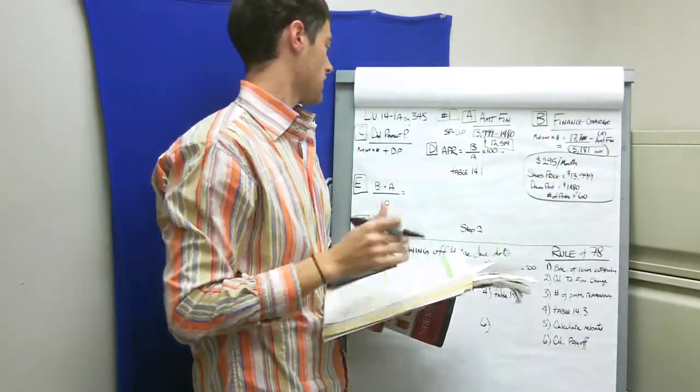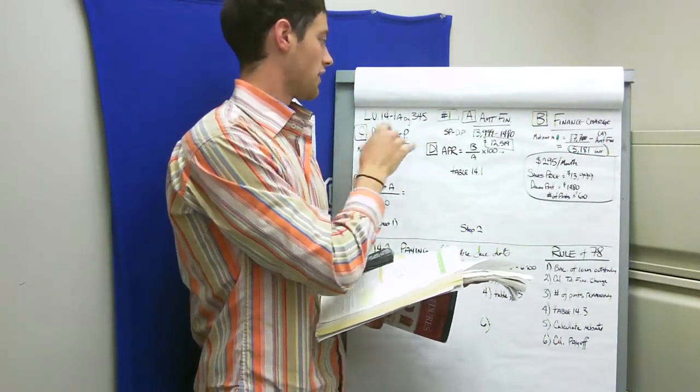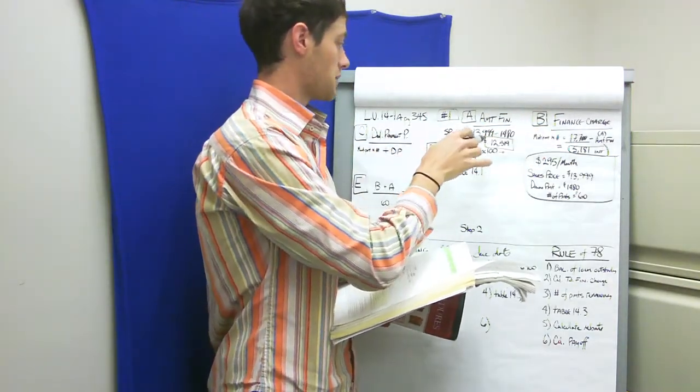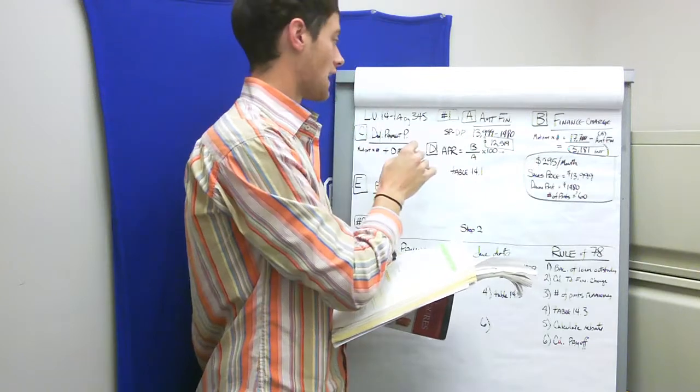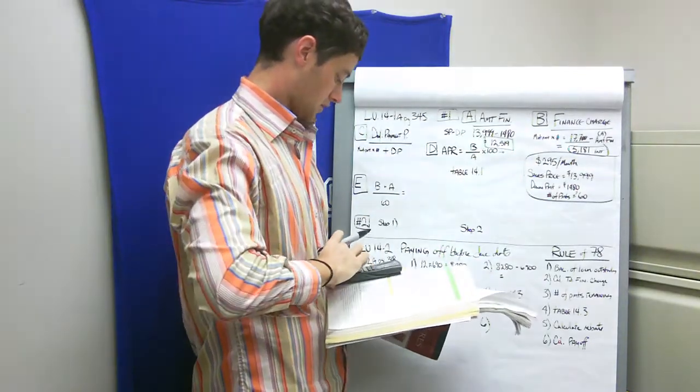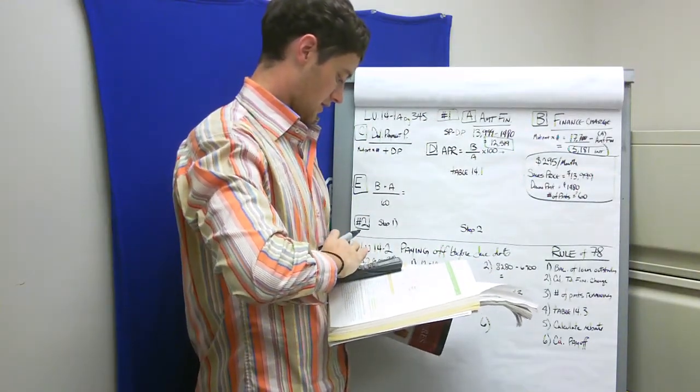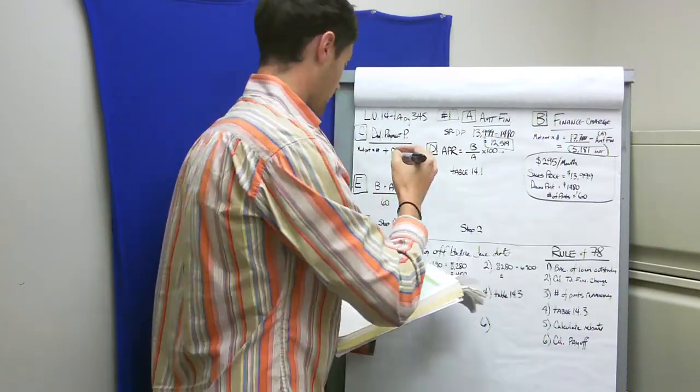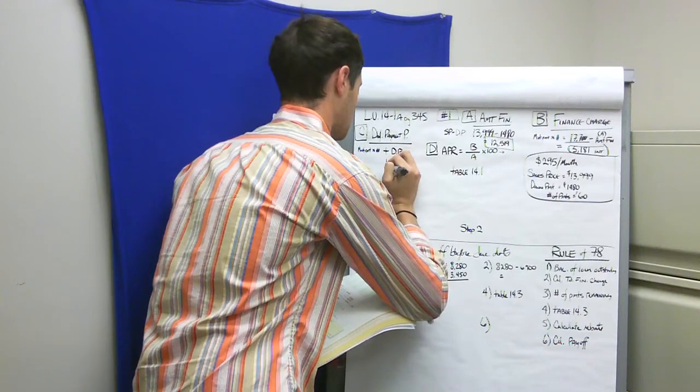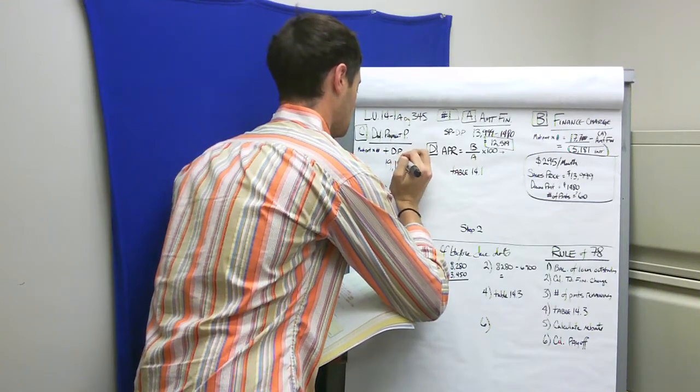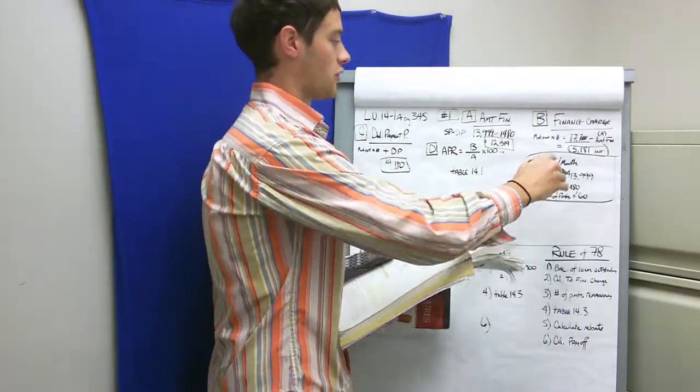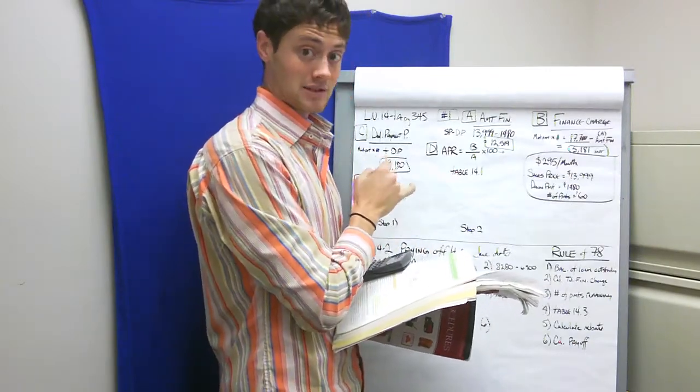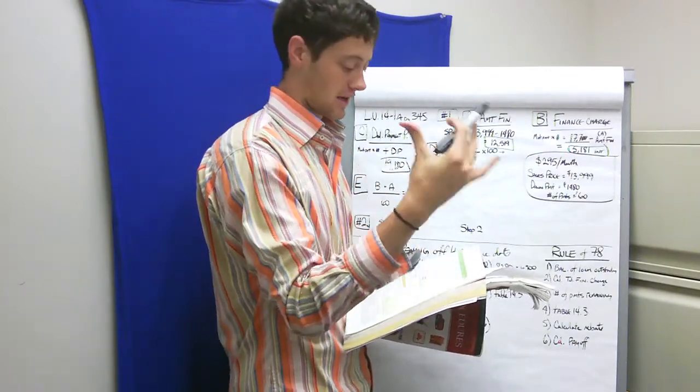Our deferred payment price is our monthly payment of $17,700 plus our down payment of $1,480. So $1,480 plus $17,700 is $19,180. If we thought $14,000 was expensive, we're actually paying $19,000 for the car by the time we have it all paid off.